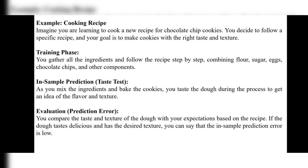In the training phase, you gather all the ingredients and follow the recipe step by step, combining flour, sugar, eggs, chocolate chips and other components. Next, in-sample prediction — it's like a taste test. It checks whether the training data fits the model or not. As you mix the ingredients and bake the cookies, you taste the dough during the process to get an idea of the flavor and texture — checking whether it will give a good texture and taste.